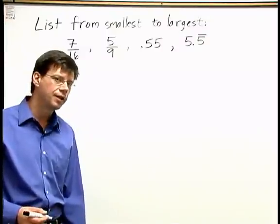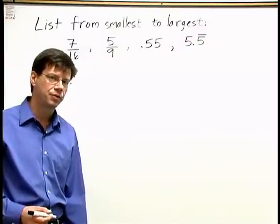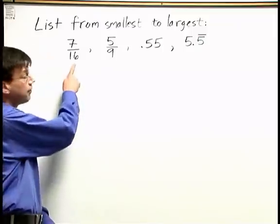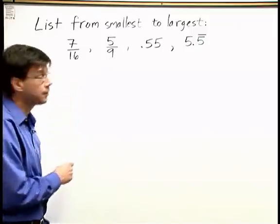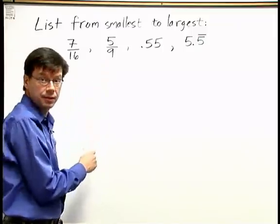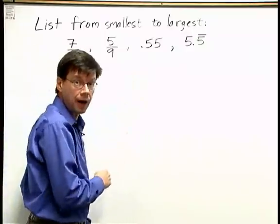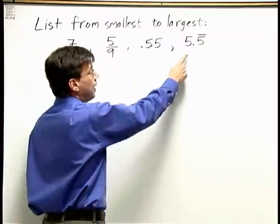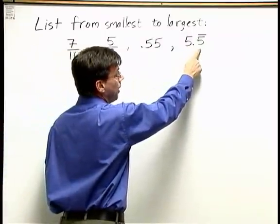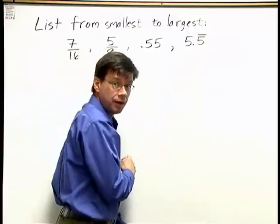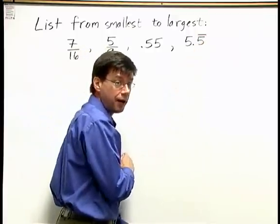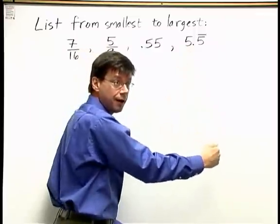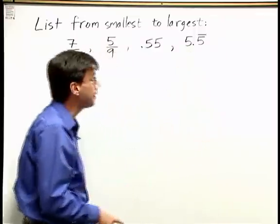Here's a problem where we're going to list four numbers from smallest to largest. The four numbers are 7 sixteenths, 5 ninths, 0.55 or 55 one-hundredths, and 5.5 with a bar above the second 5 — that means 5.55555 repeating on and on.